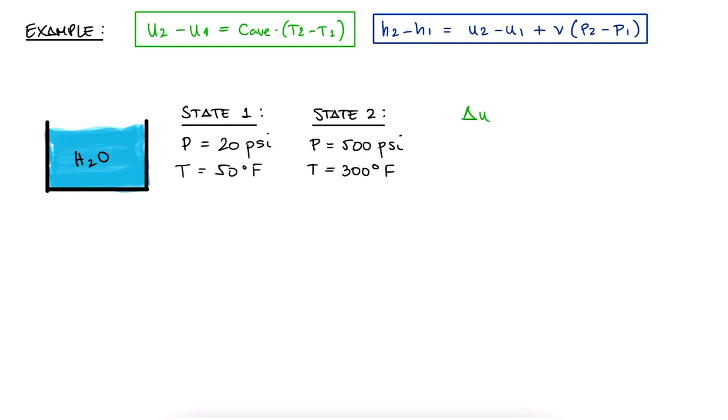Determine the change in specific internal energy and specific enthalpy of water using a) compressed liquid tables, b) incompressible substance approximation and property tables, and c) the specific heat model. As always, pause here and try solving this problem yourself before watching the solution.